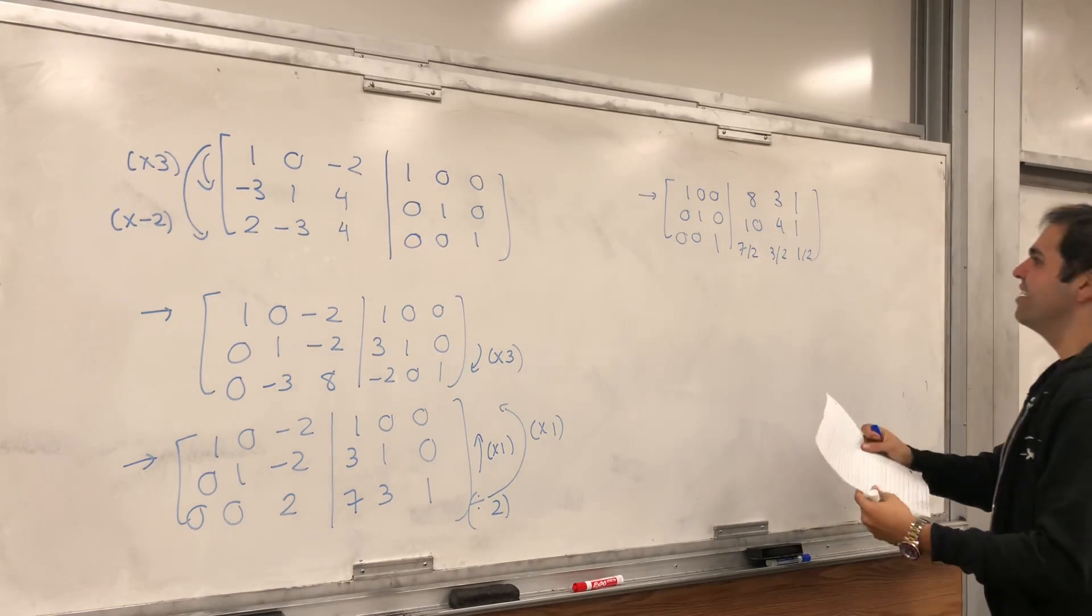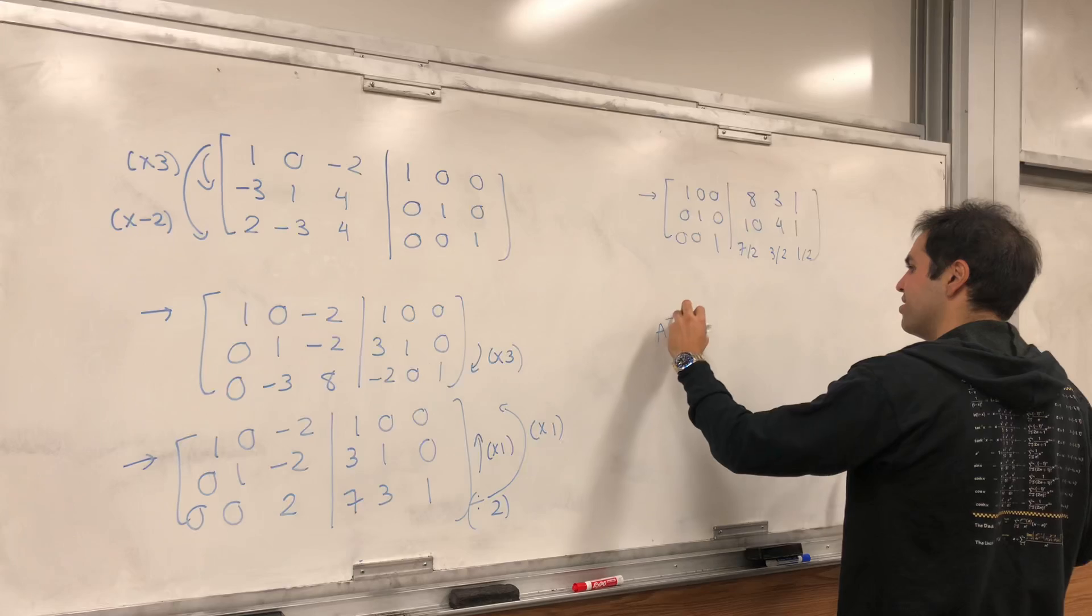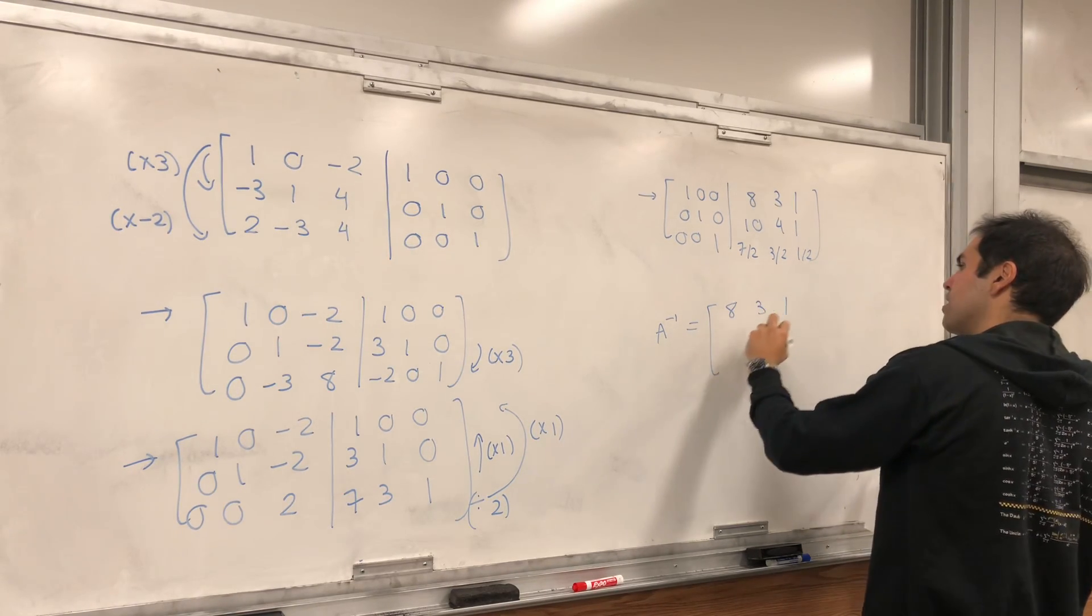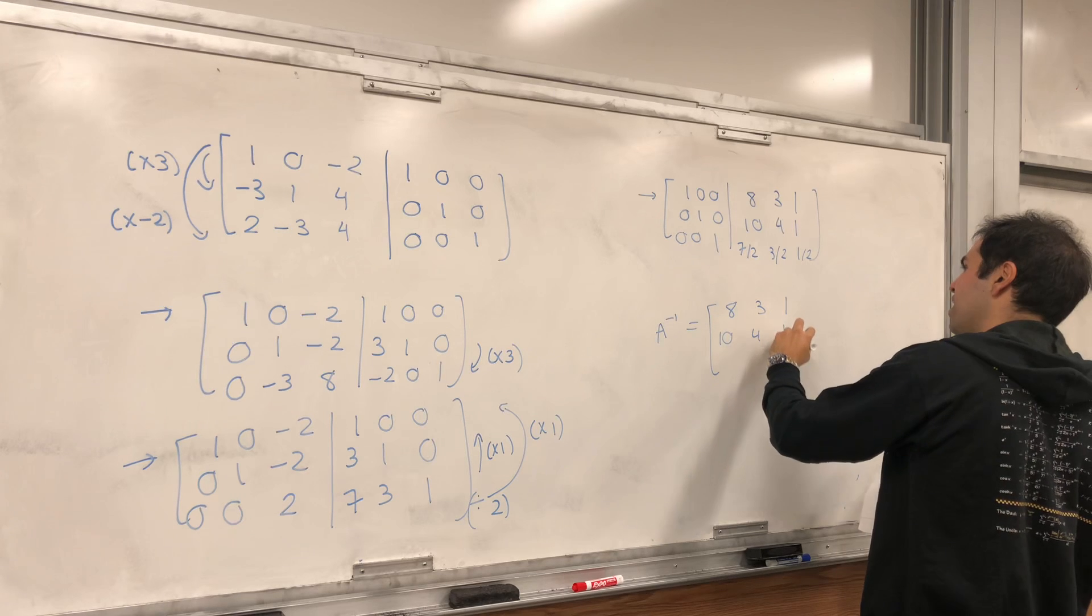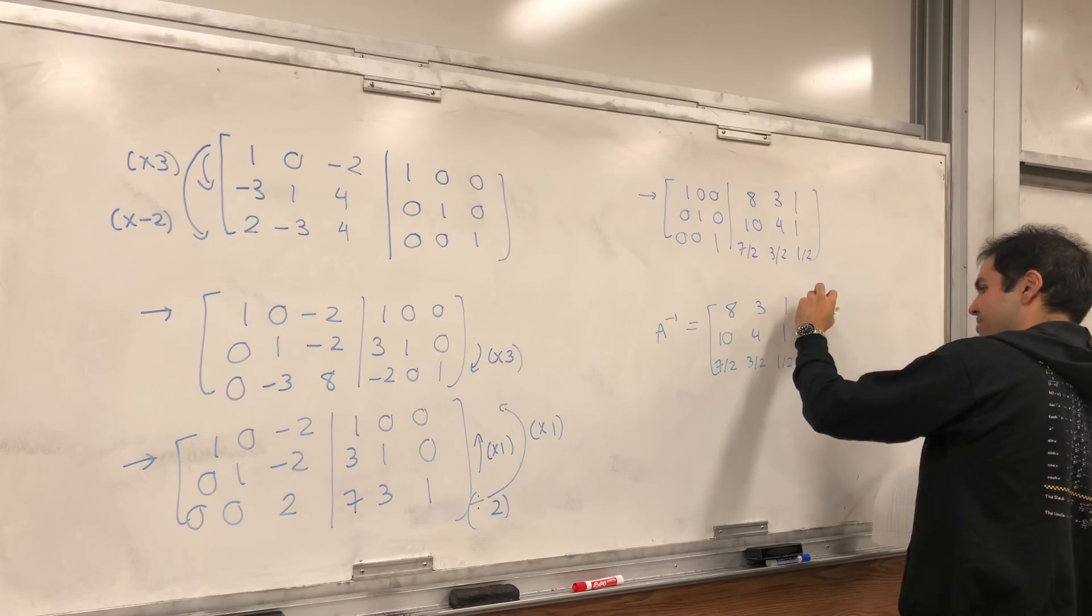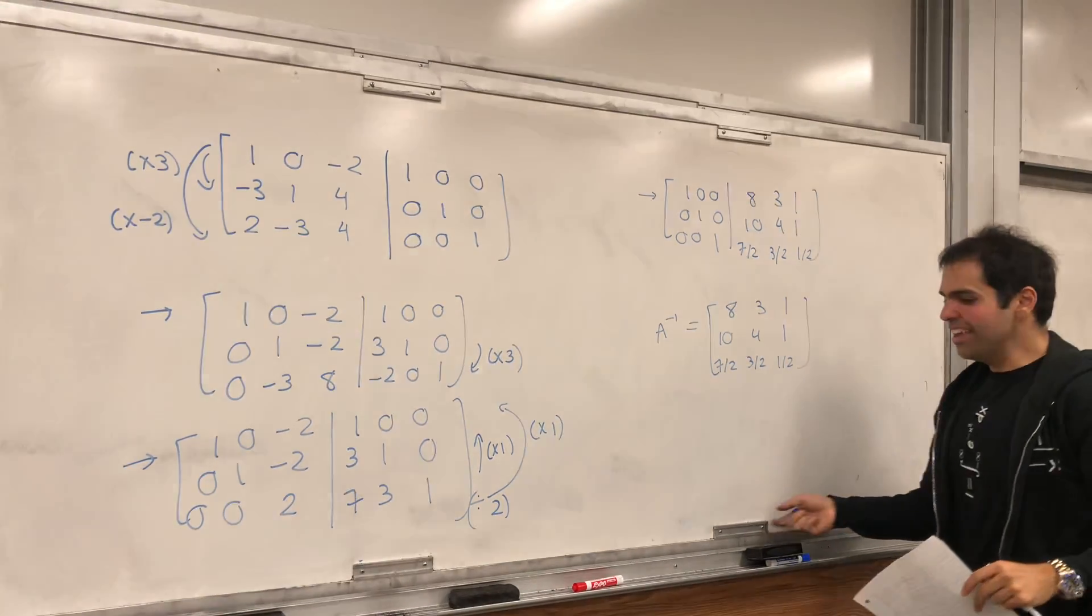And it turns out, interestingly, this will give you your inverse. So A inverse will be 8, 3, 1, 10, 4, 1, 7 halves, 3 halves, 1 half. Now, ta-da, that's how you find your inverse.